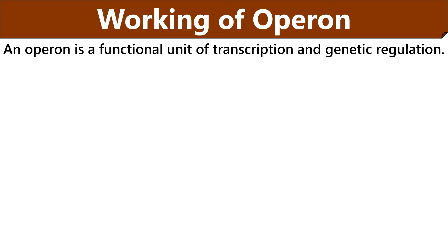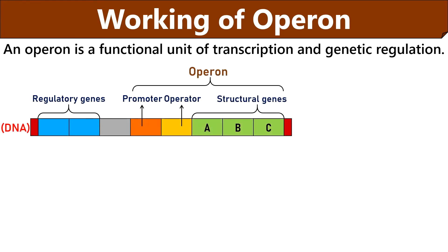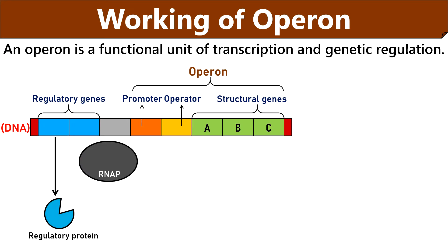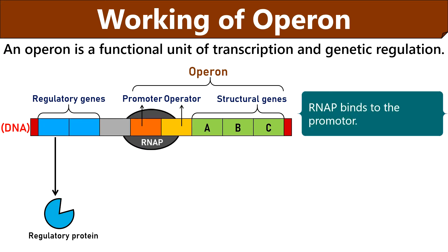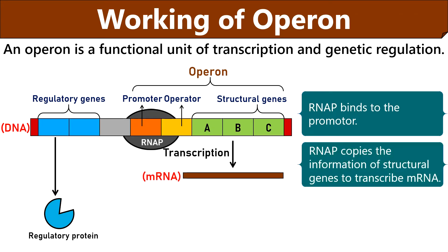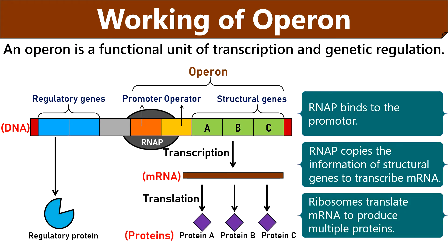Now we will discuss the working of operon. Operon is a functional unit of DNA regulating gene expression and synthesis of polypeptides. In the operon system, regulatory genes synthesize regulatory or repressor proteins that bind to the operator site by either promoting or inhibiting transcription. The RNA polymerase is an enzyme that binds to the promoter region. If the operator site is free from the repressor protein, then the RNA polymerase will move further and copies the information carried by the structural genes to transcribe mRNA. At last, the ribosomes translate the mRNA into multiple proteins.